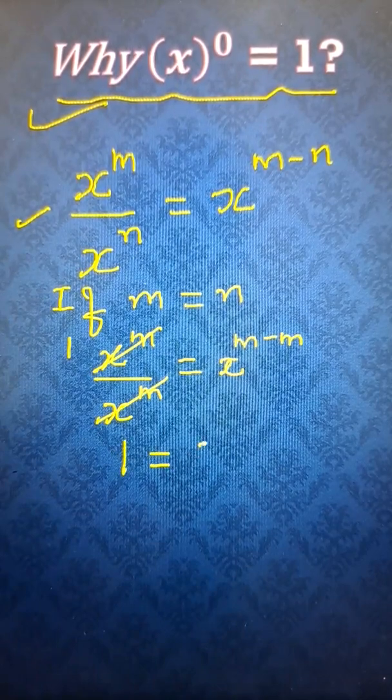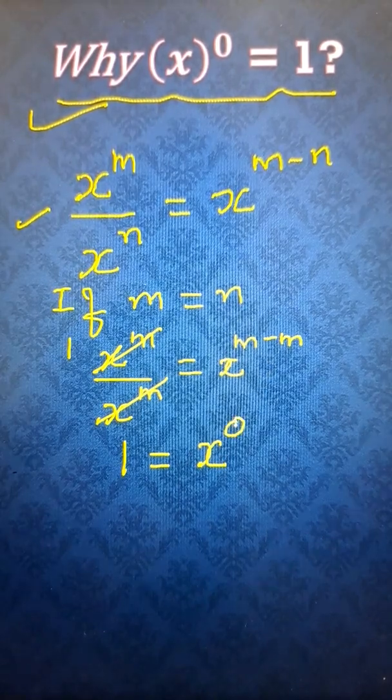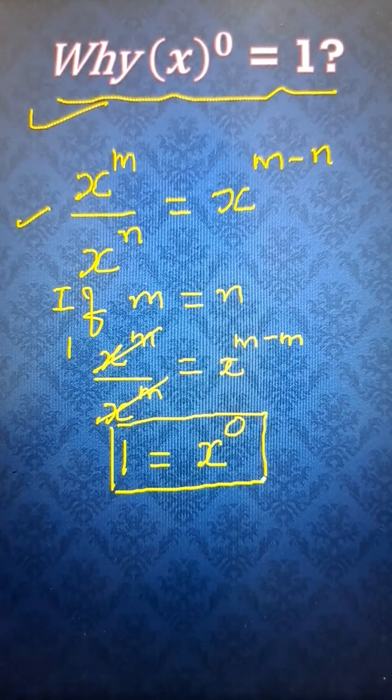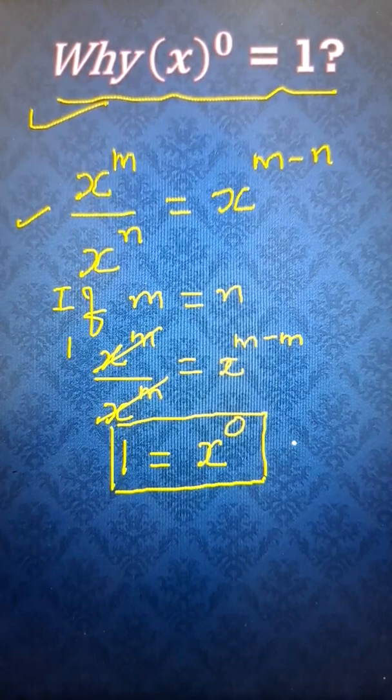And what happens to the right hand side? x raised to power 0. Look at that result. Any base raised to power 0 will always give you 1.